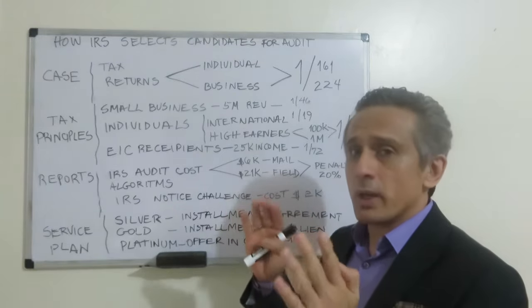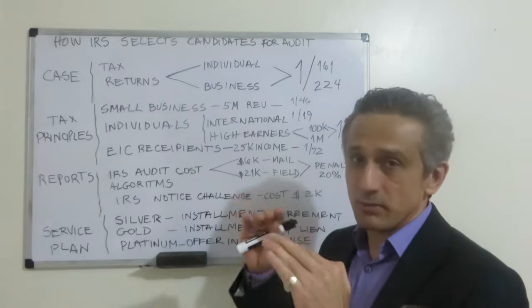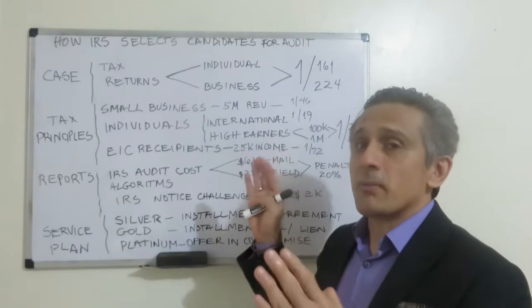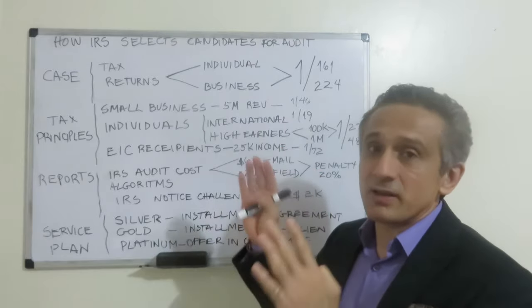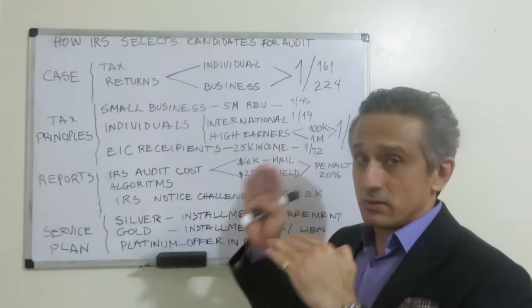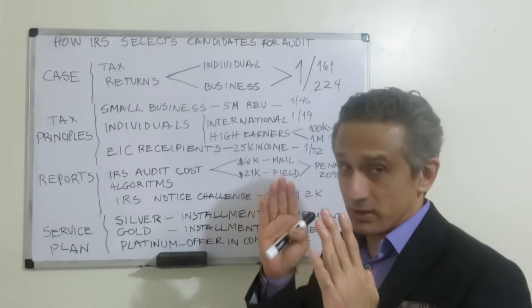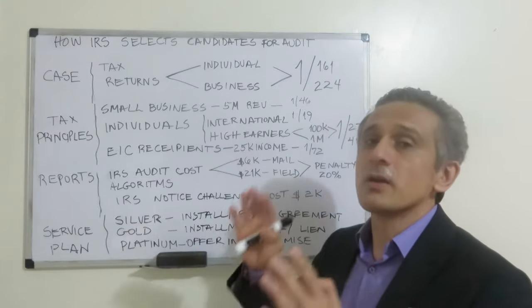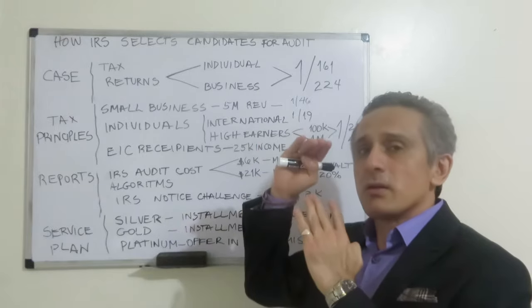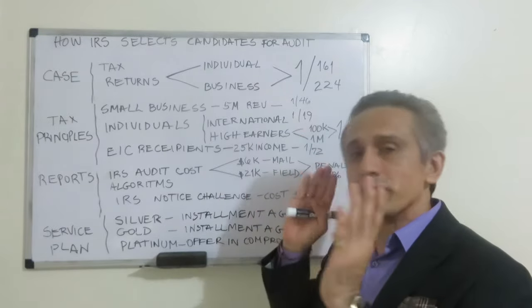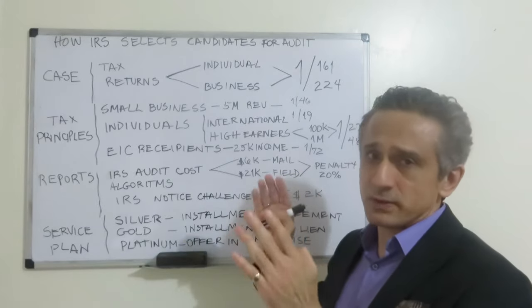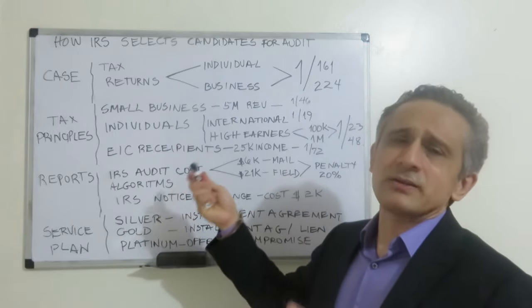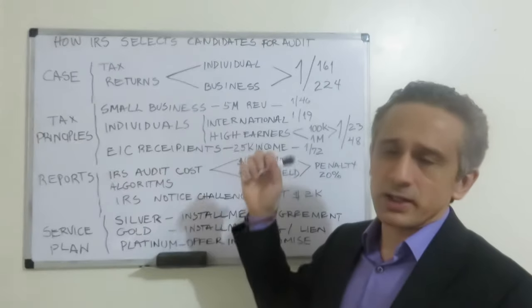Remember, there is no single person behind this system preparing these letters — the IRS notices that people usually receive. This is an IT system that has been created over many years and is updated every year. Precisely because of expense data across industries and income levels accumulated over many years, the IRS now has a very accurate system for detecting mis-reporting of income, over-reporting of expenses, and even fraud related to tax credits like the Earned Income Credit.